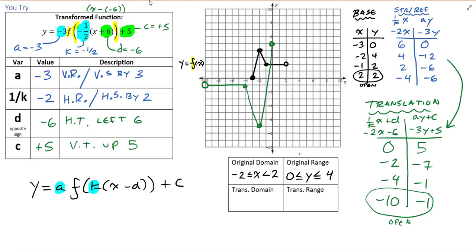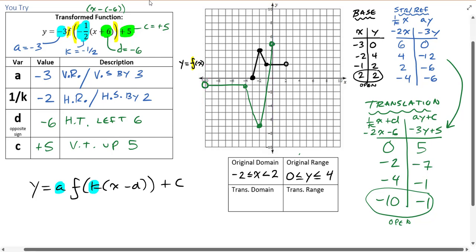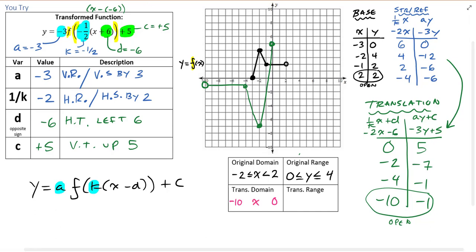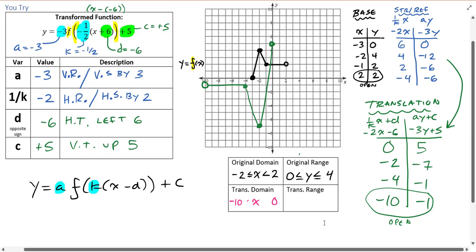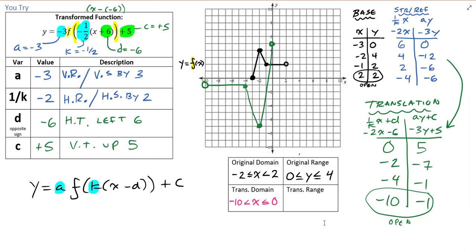For the transformed function: the domain runs from x = -10 (excluded — that's the open point) to x = 0 (included) — so negative ten < x ≤ zero. For the range: the highest y value is 5 and the lowest is negative seven, and both endpoints are included since there's no open point at the ends — so negative seven ≤ y ≤ five. There you go — domain and range of the original and the final transformed graph.